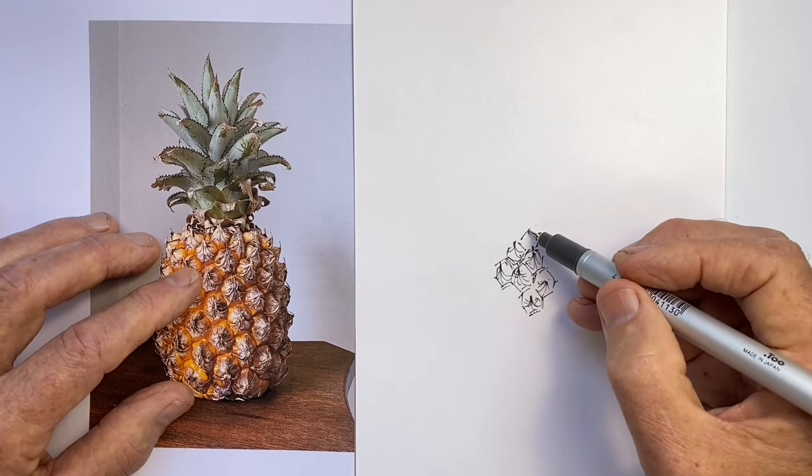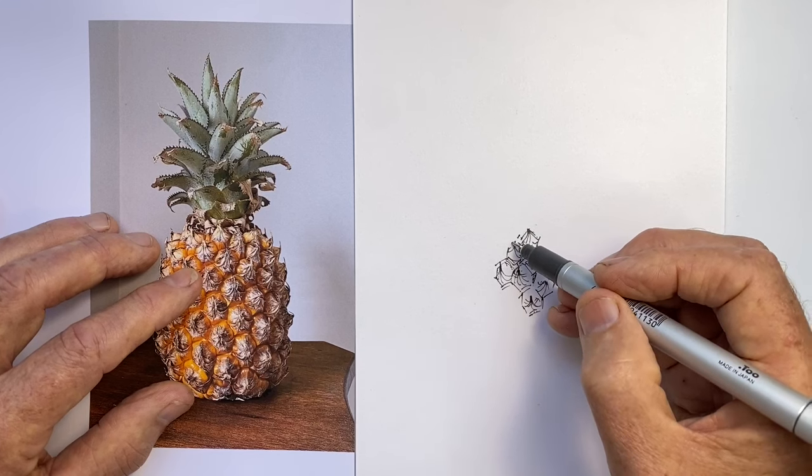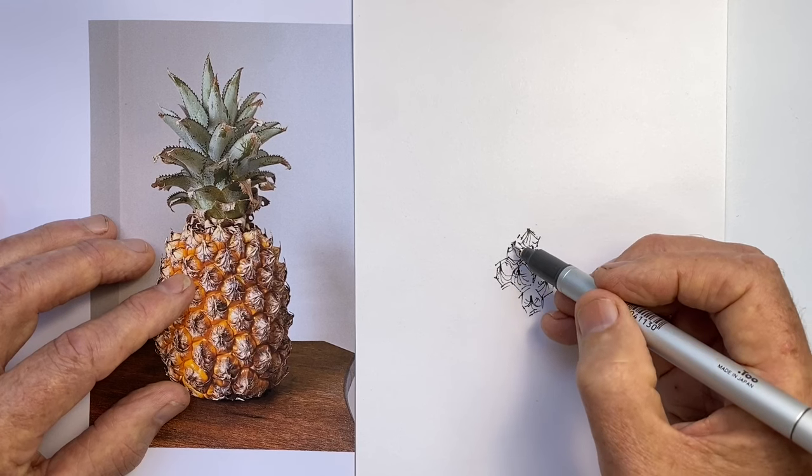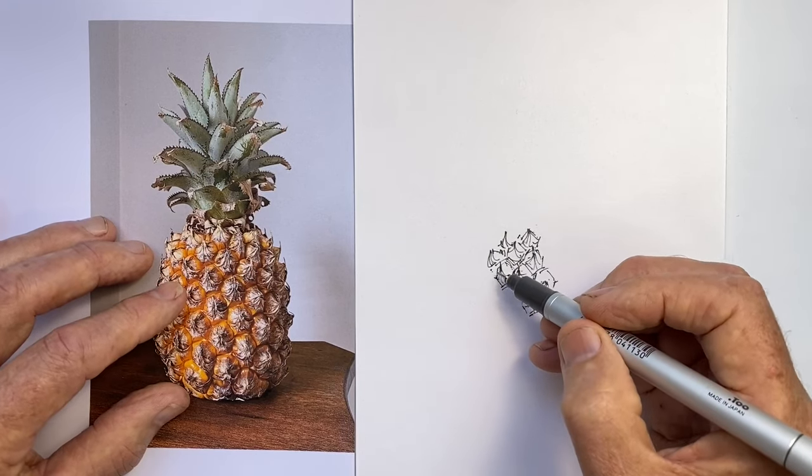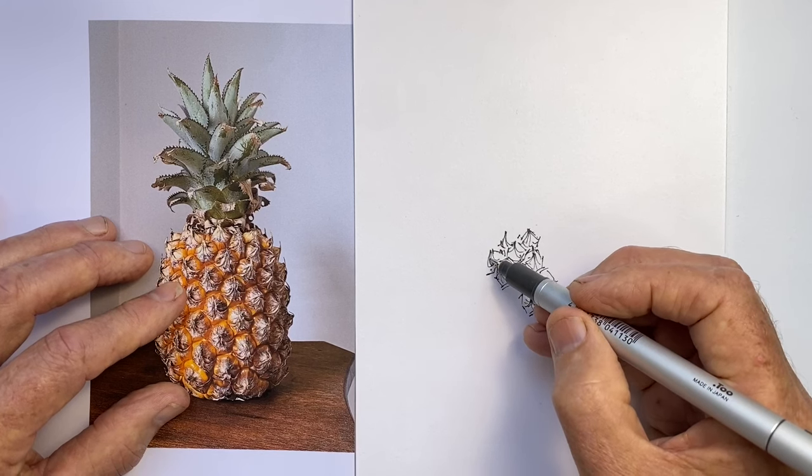And of course, how these hexagons look change as they curve around the side. So we want to maintain that generalized pattern of the curving hexagons.